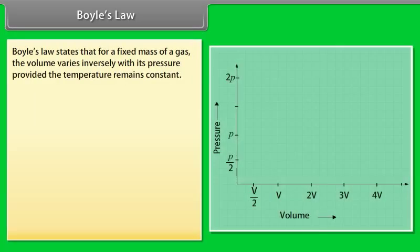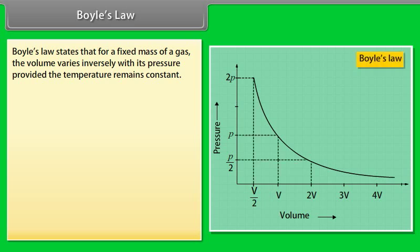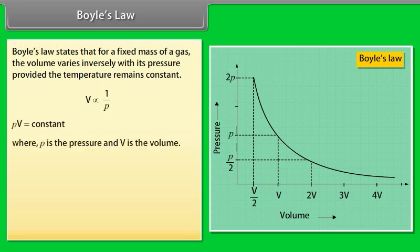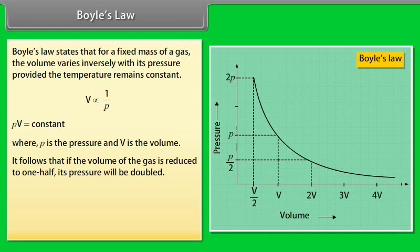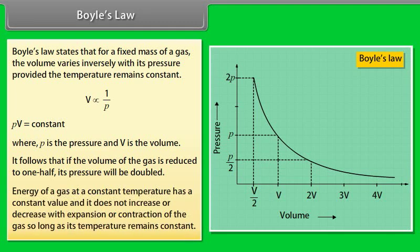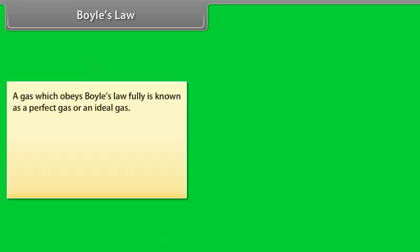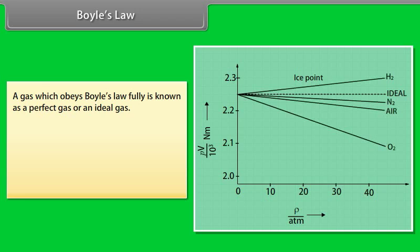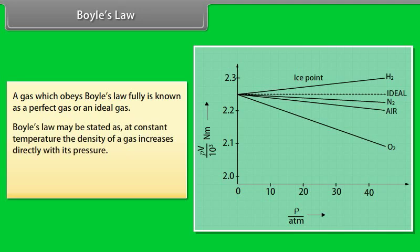Boyle's law states that for a fixed mass of a gas, the volume varies inversely with its pressure provided the temperature remains constant. PV is equal to constant, where P is the pressure and V is the volume. It follows that if volume of the gas is reduced to one half, its pressure will be doubled. Energy of a gas at a constant temperature has a constant value and it does not increase or decrease with expansion or contraction of the gas so long as its temperature remains constant. A gas which obeys Boyle's law fully is known as perfect gas or an ideal gas. Boyle's law may be stated as at constant temperature, the density of a gas increases directly with its pressure. P over rho is equal to constant.